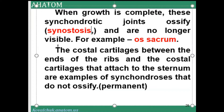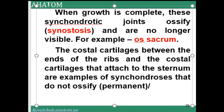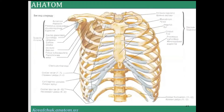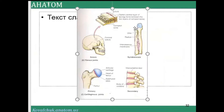The intervertebral discs connect vertebral bodies. When growth is complete, the synchondrosis joint becomes ossified — this is called synostosis, where the binding tissue between bones is no longer visible. For example, the sacrum consists of five fused vertebrae. Synostosis also occurs in the sternum. Vertebral bodies are also connected by intervertebral discs.